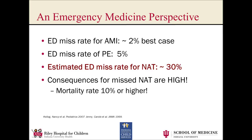For example, emergency medicine physicians spend a lot of time during training and continuing medical education learning about things like acute coronary syndrome and pulmonary embolism. And why is that? Well, it's because these are diseases that we don't want to miss. We miss them and people die.